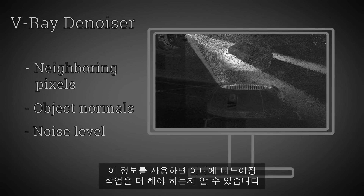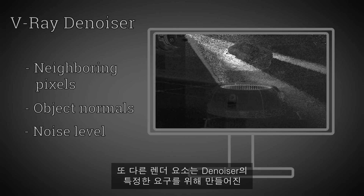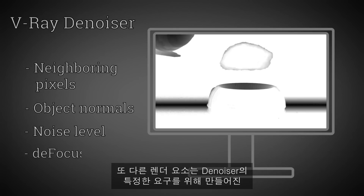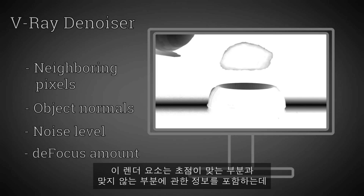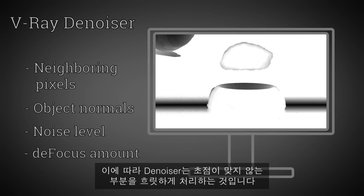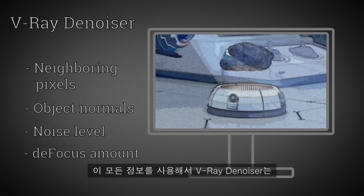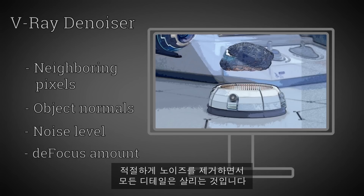Using this information, the Denoiser would know where to denoise more. Another render element created for the specific needs of the Denoiser is the Defocus Render element. This render element contains information about which parts of the image are in focus and which are not. This way, the Denoiser would blur more the parts that are not in focus. Using all of this information, the V-Ray Denoiser manages to adaptively get rid of the noise and preserve all the details.